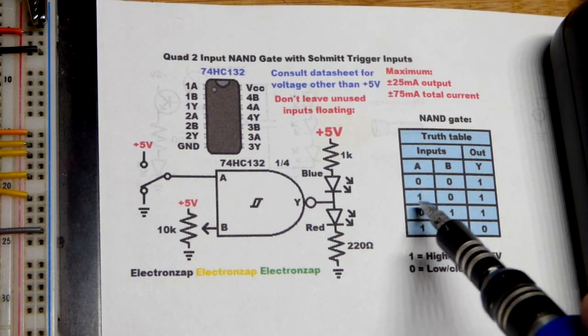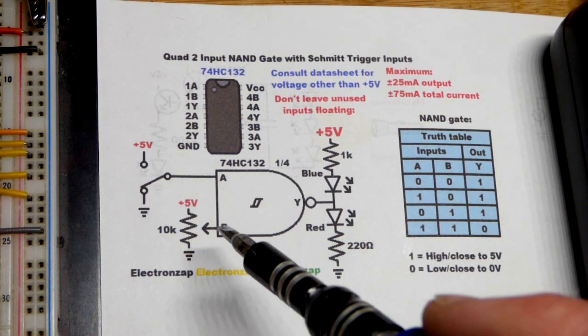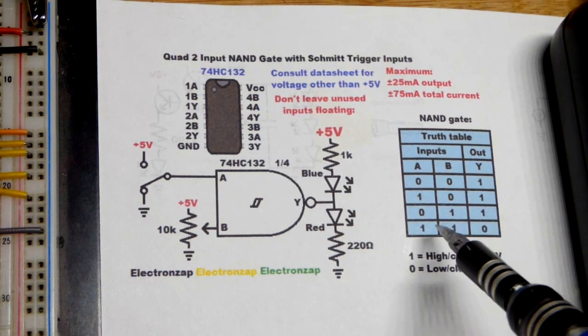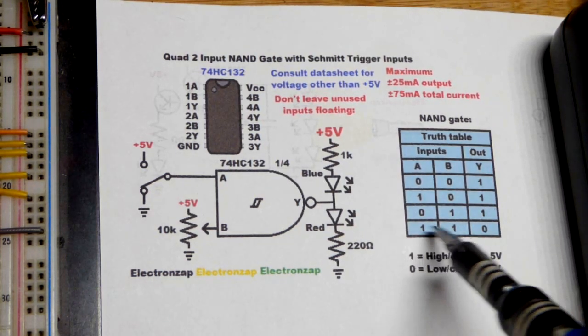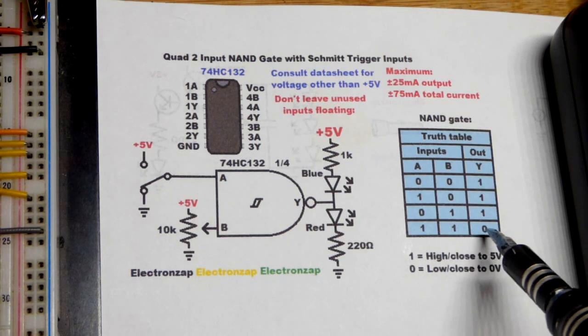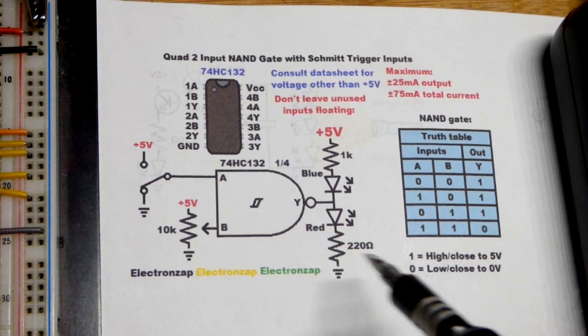If any inputs are low, as we saw before, 0 volts for the most part or close to 0, close enough to 0 I should say, then the output is high. Whereas if all of the inputs are high, that's the only time when it comes to NAND gates that the output will be low, 0 volts, which we established 5 volts for high right there.